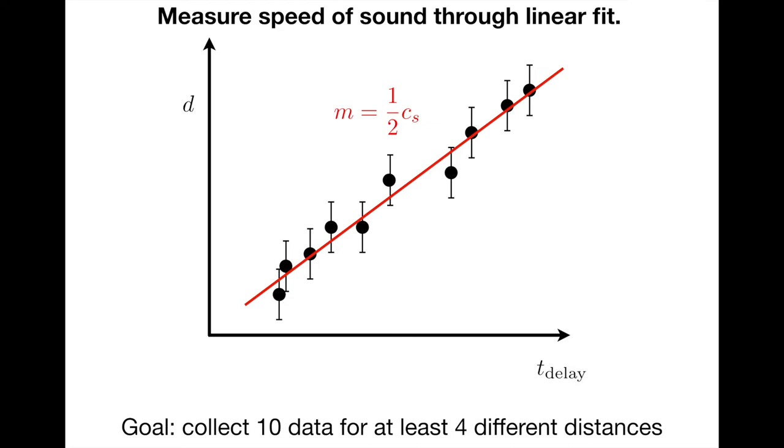We'll use this relationship in the context of a linear regression. We'll measure several different distances and delay times—at least 10 separate data points at four different distances. If we plot the distance to the wall on the vertical axis and the delay time on the horizontal axis, we can carry out a linear fit where the slope of that line is going to be half the speed of sound.